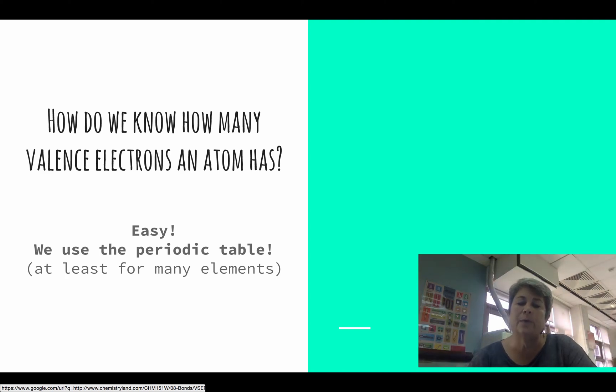The periodic table is a very useful tool when trying to determine the number of valence electrons that any atom of an element will have. And that's at least for many elements.